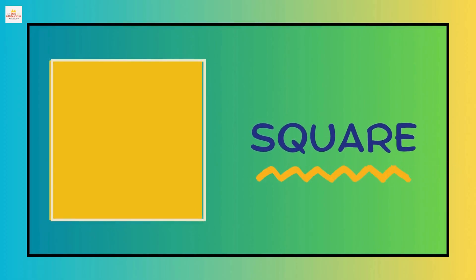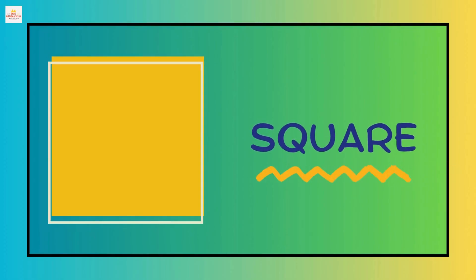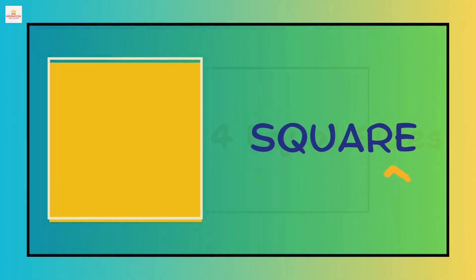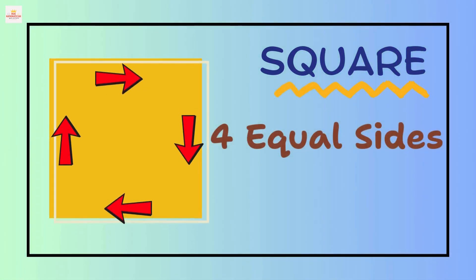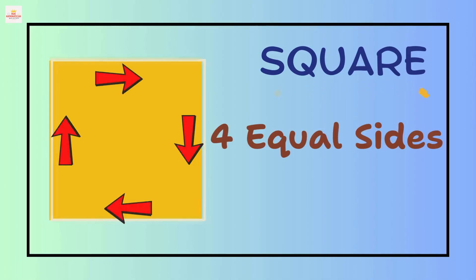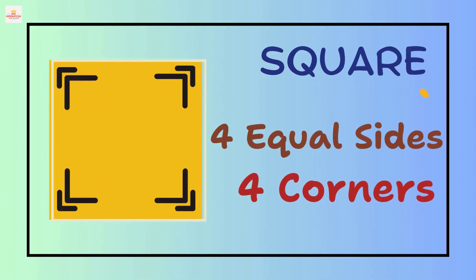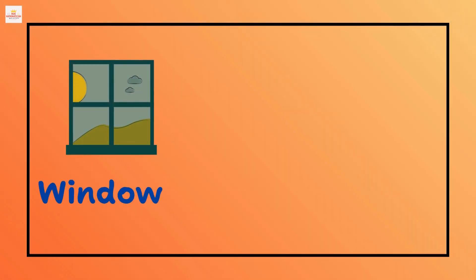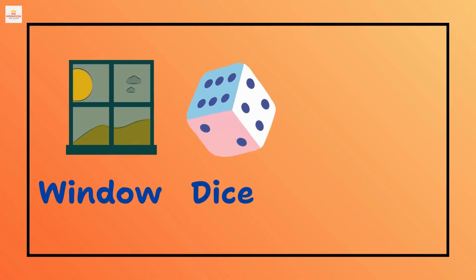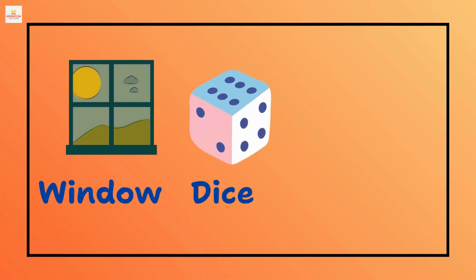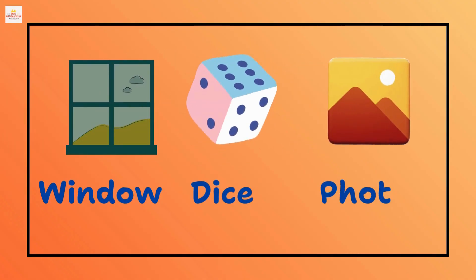This is a square. It has 4 equal sides and 4 corners. We see squares in a window, sides of a dice and photo frames.